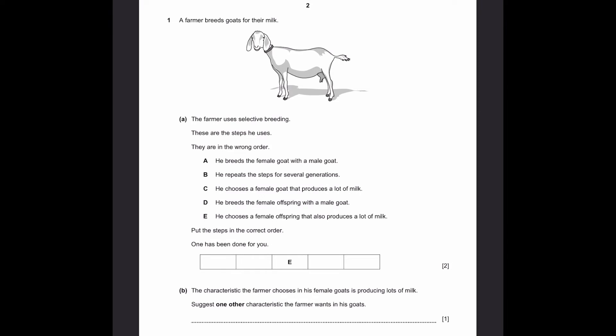Question 1. A farmer breeds goats for their milk. Part A: The farmer uses selective breeding. These are the steps he uses. They're in the wrong order.